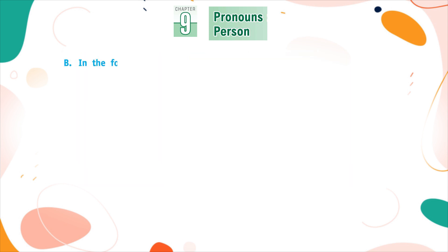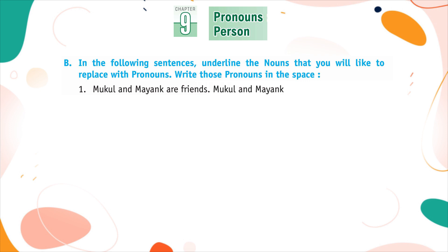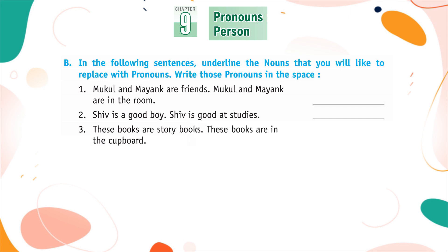In the following sentences, underline the nouns that you would like to replace with pronouns. Write those pronouns in the space. Mukul and Mayank are friends. Mukul and Mayank are in the room. Shiv is a good boy. Shiv is good at studies. These books are story books. These books are in the cupboard. I have a bicycle. I ride the bicycle daily.